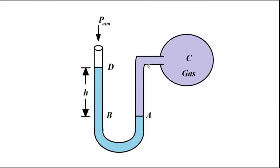Since the second limb is connected to the gas chamber where the gas pressure is to be measured, the height of mercury in both limbs is not the same. This difference in height between the two limbs is an important indicating parameter which gives us information about the pressure.